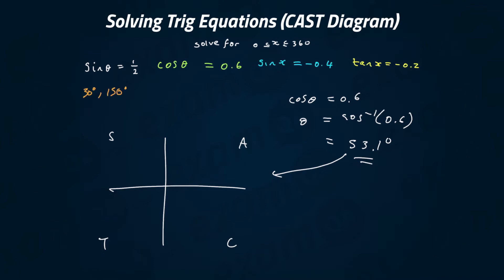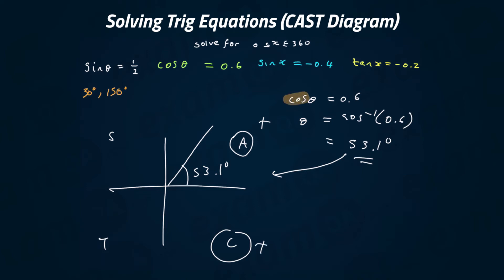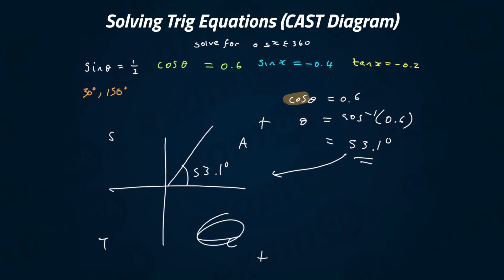We mark 53.1 degrees onto the diagram — start from the positive x-axis and go anti-clockwise. We end up in the 'all' quadrant, which is positive. Whatever trig function you're working with is always taken as positive, and so is 'all.' So we draw 53.1 degrees again in the cos quadrant, from the x-axis.